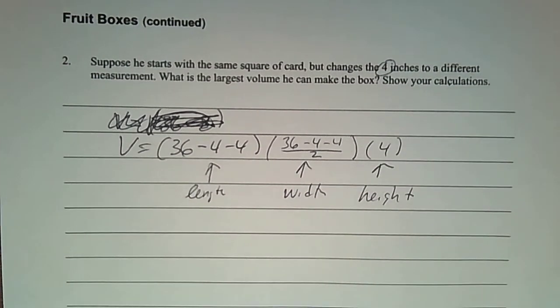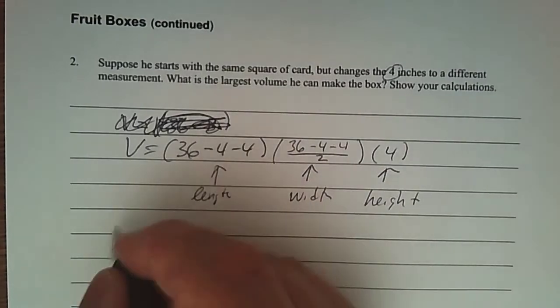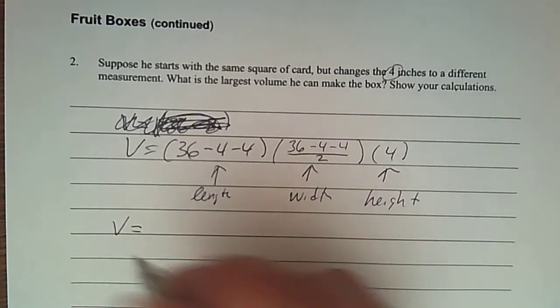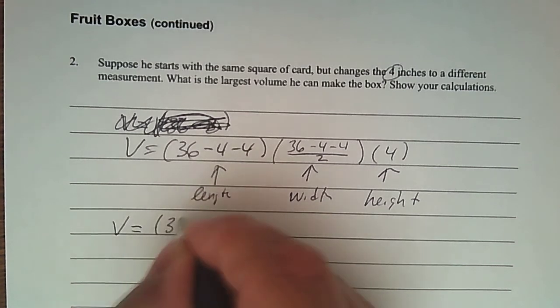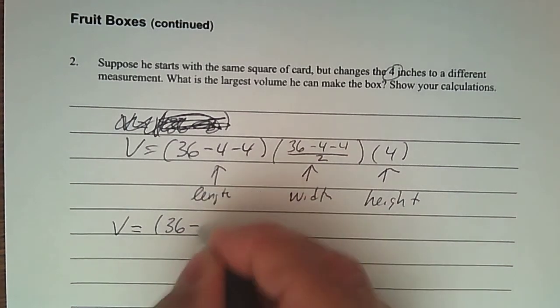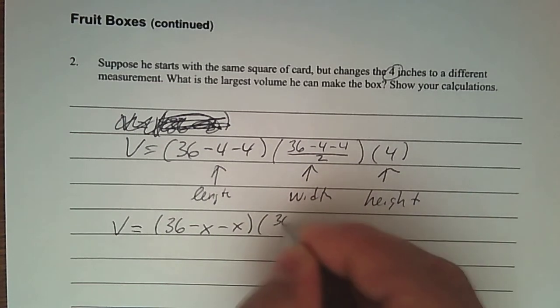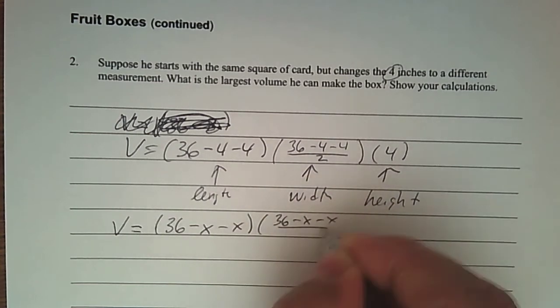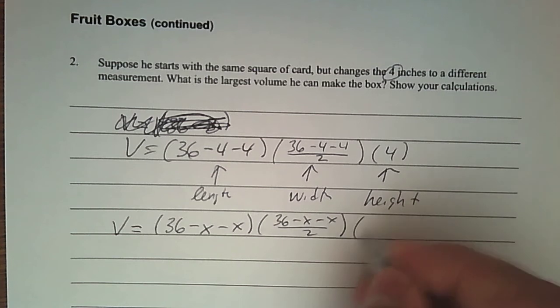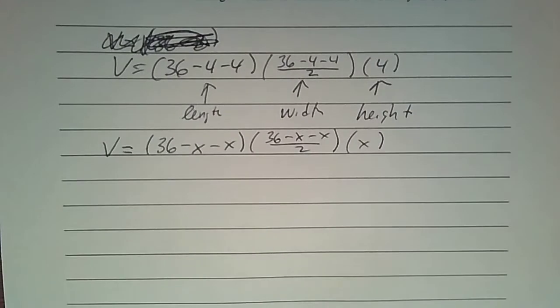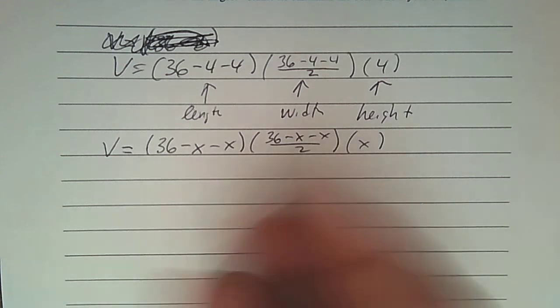But I want to change wherever there's a four. I don't know what to change it to. It's a variable, it could vary, but I want to find the one answer that will give me the most capacity. So I'm going to change it to a variable. Instead of four, I'm going to change it to x. For every four, I put in x to change it to a variable to see what that would be if I change the size of it.